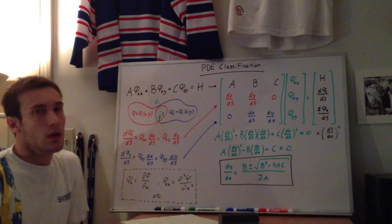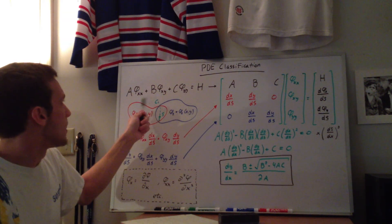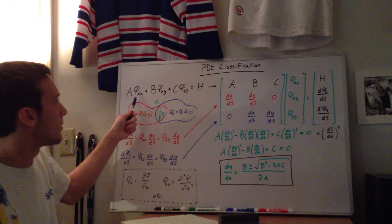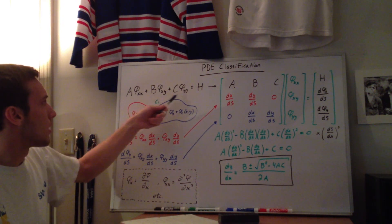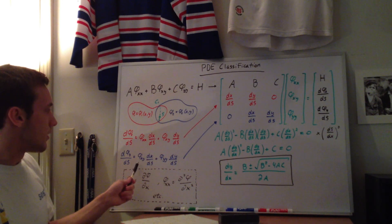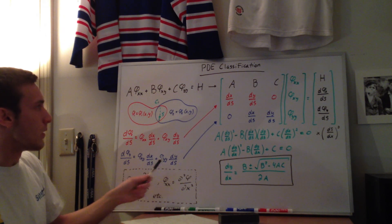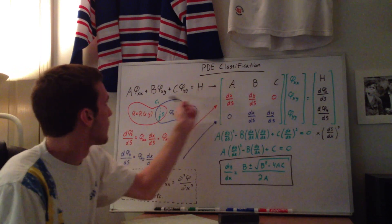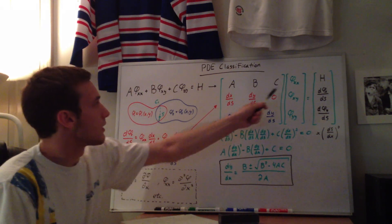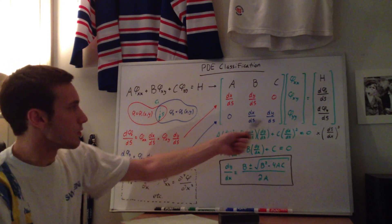We can put these into a matrix form, as shown here — I try to color code it. The vector array has phi sub xx, phi sub xy, and phi sub yy, which show up in all three equations. So a times this, plus b times this, plus c times this gives you the first equation; the next terms give you the red equation, and similarly for the third equation. The right-hand side for the first equation is h, then d phi sub x ds, and for the third equation is d phi sub y ds.